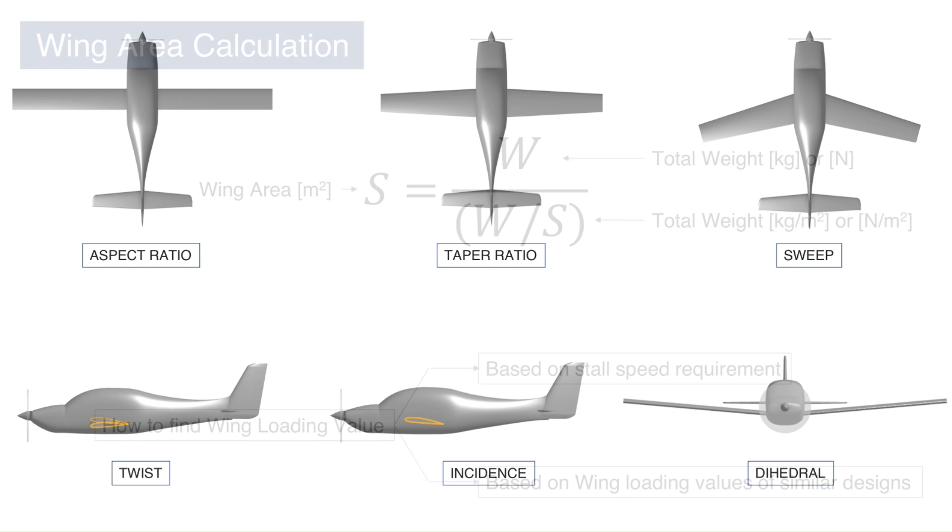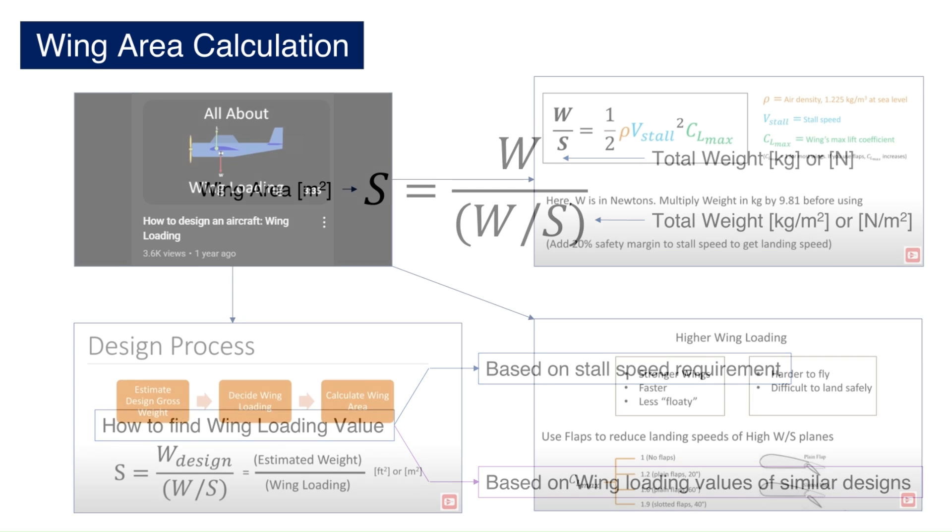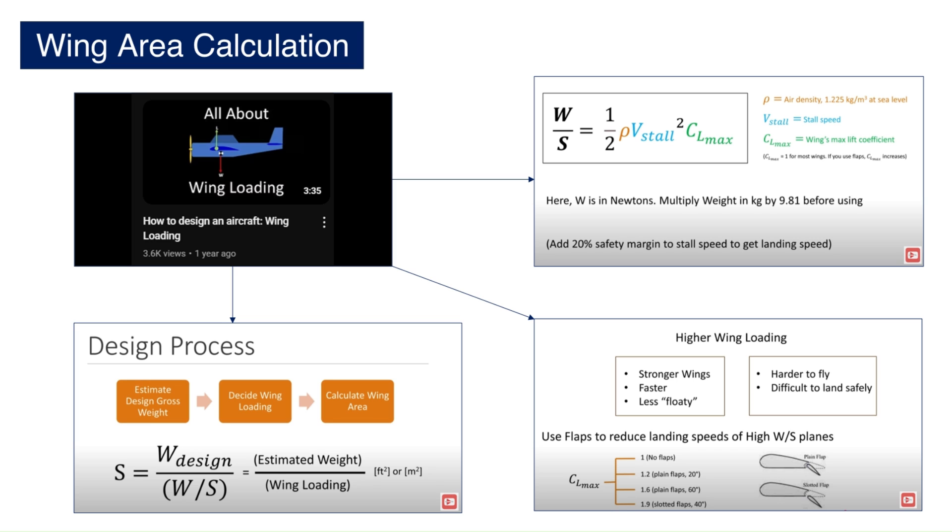Let's get started. Once the total weight of the airplane is estimated, we can calculate the wing area by simply dividing the total weight by the chosen wing loading value. The wing loading value may be selected based on the stall speed requirements or by looking at the wing loading values of similar designs and choosing an appropriate one. If you haven't selected it yet, you can watch one of my previous videos on wing loading for more info. I will link it in the description.